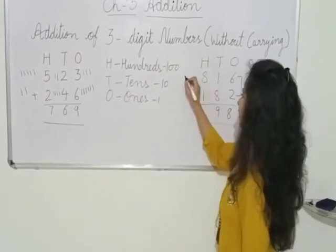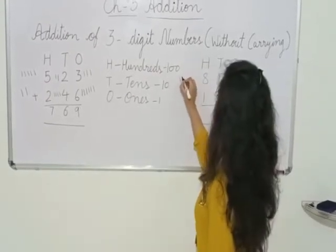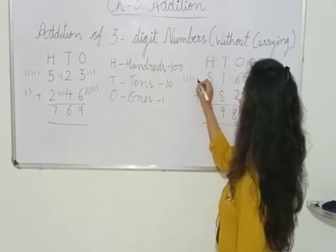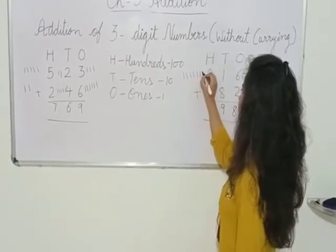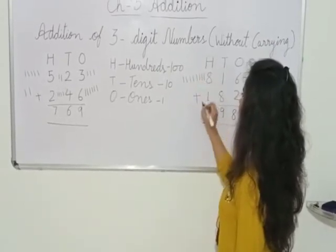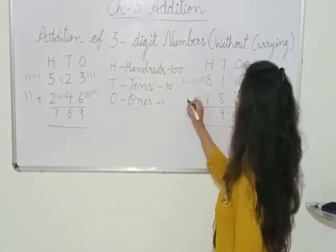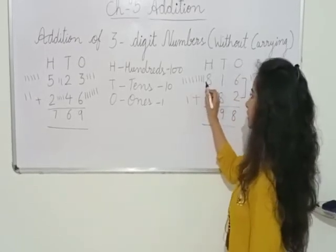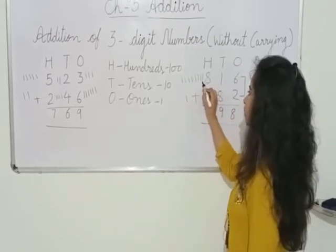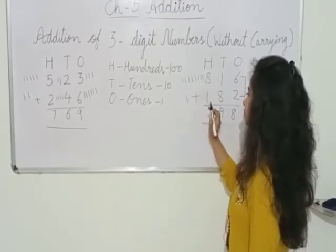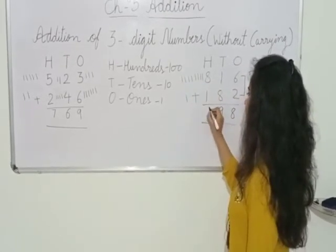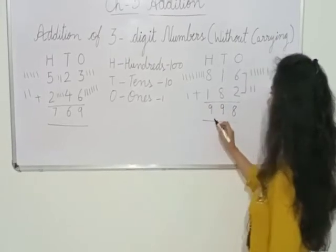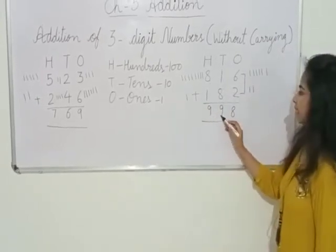Here is 8, so we will draw 8 lines: 1, 2, 3, 4, 5, 6, 7, 8. And here is 1. 8 is already there — after 8, what comes? 9. So what is our answer? Our answer is 998.